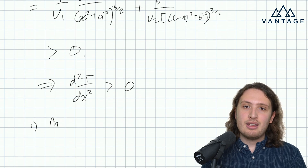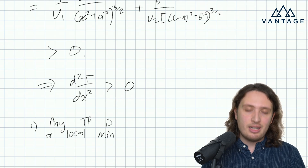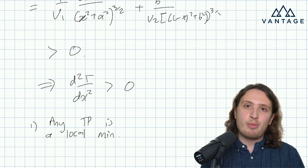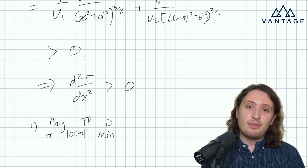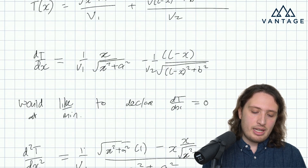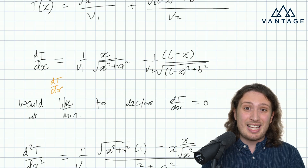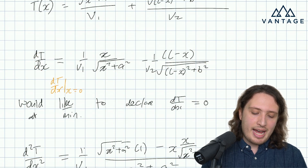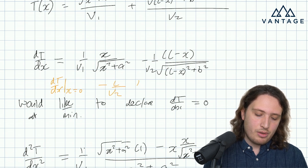What does that tell us? One thing it tells us is that any turning point is going to be a local minimum, because that's the second-order derivative condition for a minimum. But because we have such a constraint on the second derivative, we can also think more about the graph of t in general — specifically whether it's an end of an interval or a turning point that achieves the minimum. If I look at the first derivative and evaluate it at x equals zero, that term is just zero, and the other term gives minus l over V2 over that square-root expression — clearly a negative number.